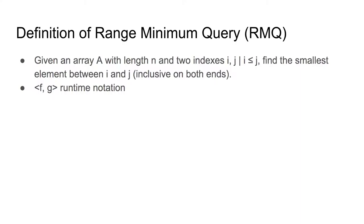The notation I'll be using for runtime is f, g — where f represents the big-O build or preprocessing time, and g represents the query time. For a range minimum query, you might have some initialization cost to build a structure, but afterwards you also need to answer multiple queries. So we time those separately: build cost represented by f, and query cost represented by g.